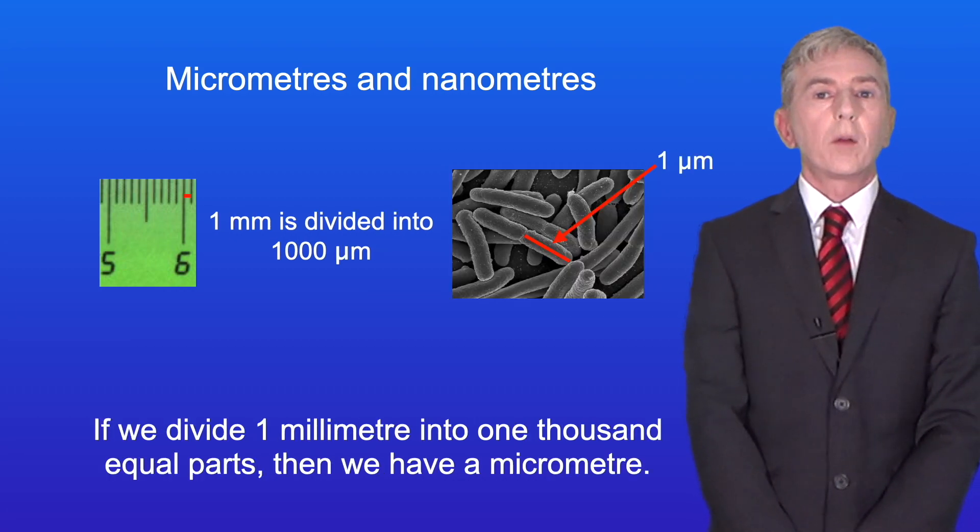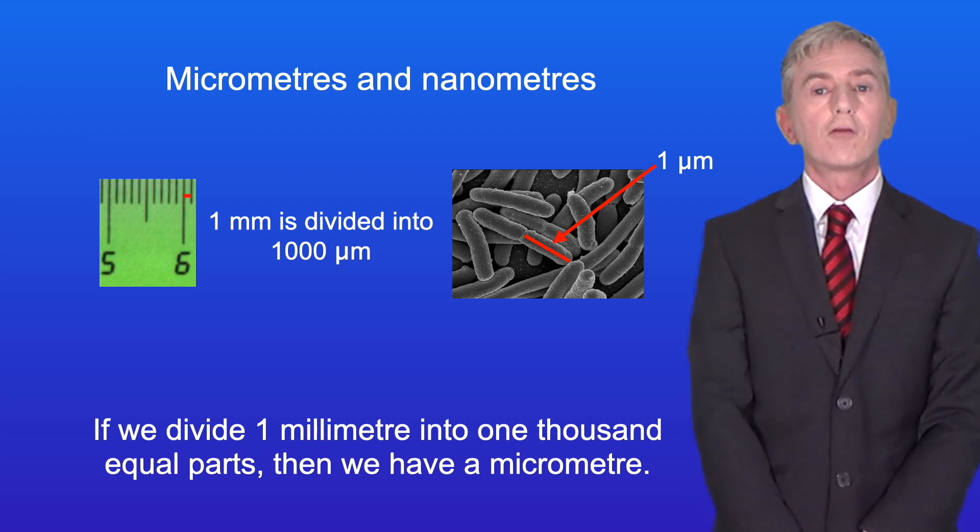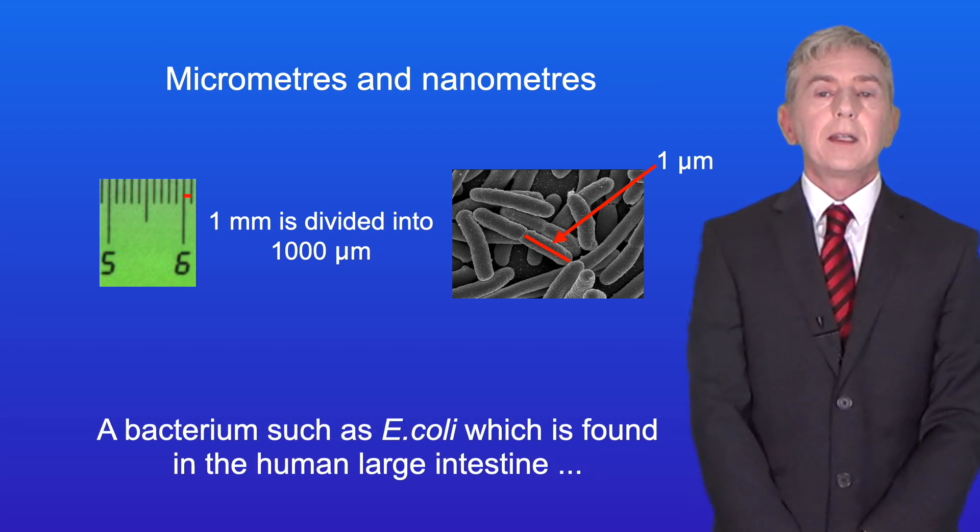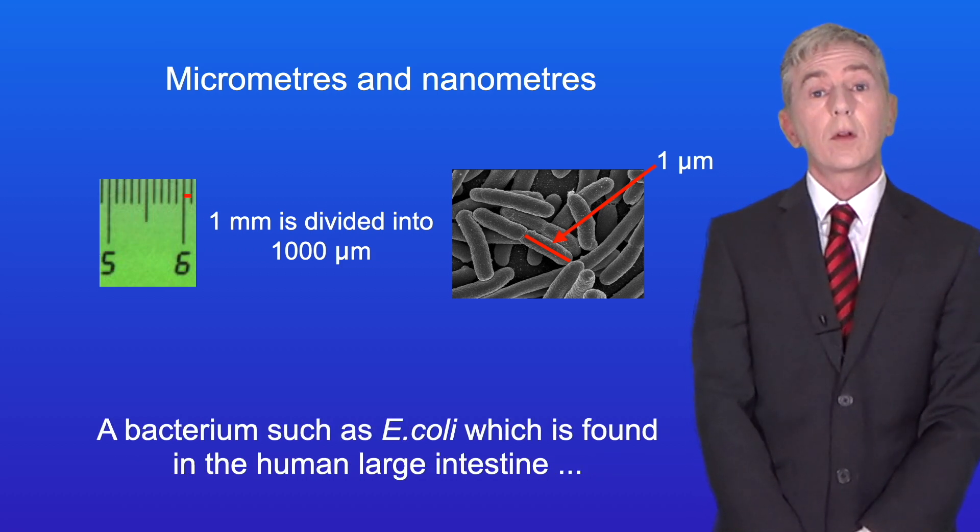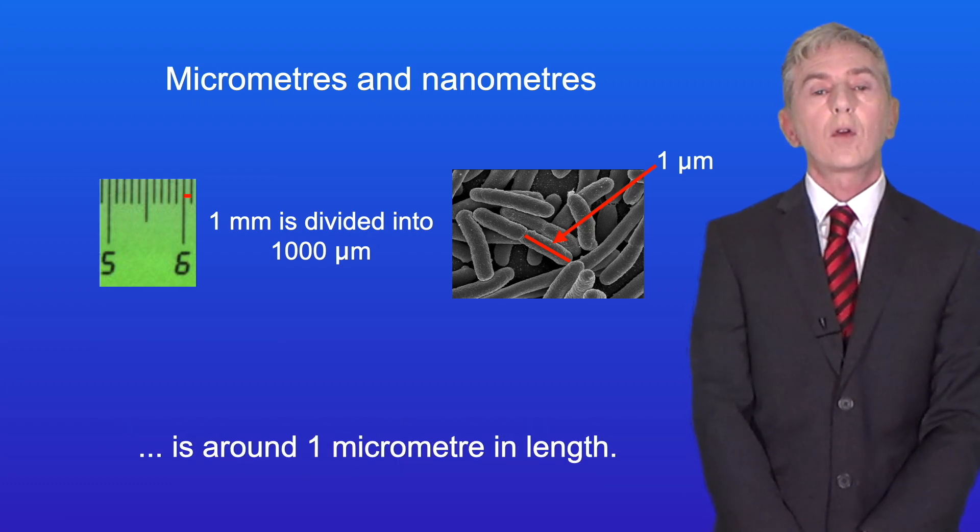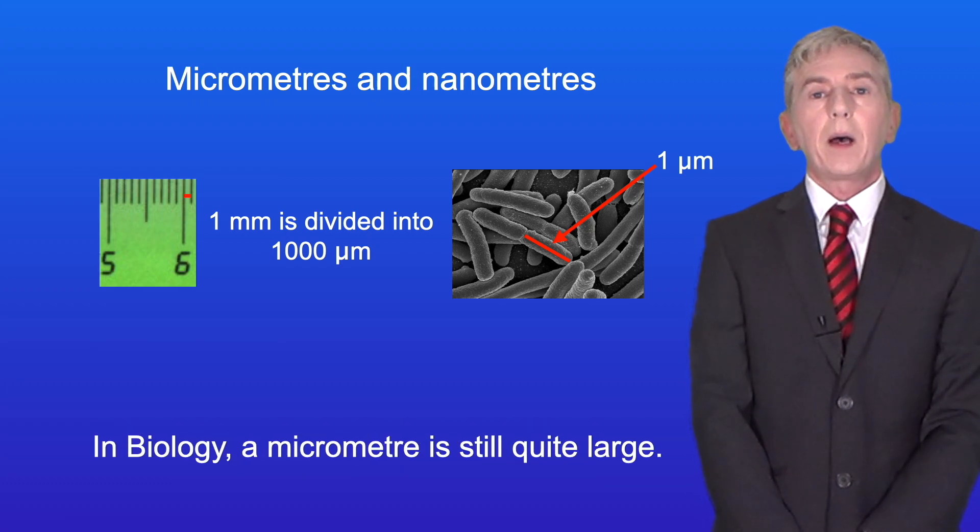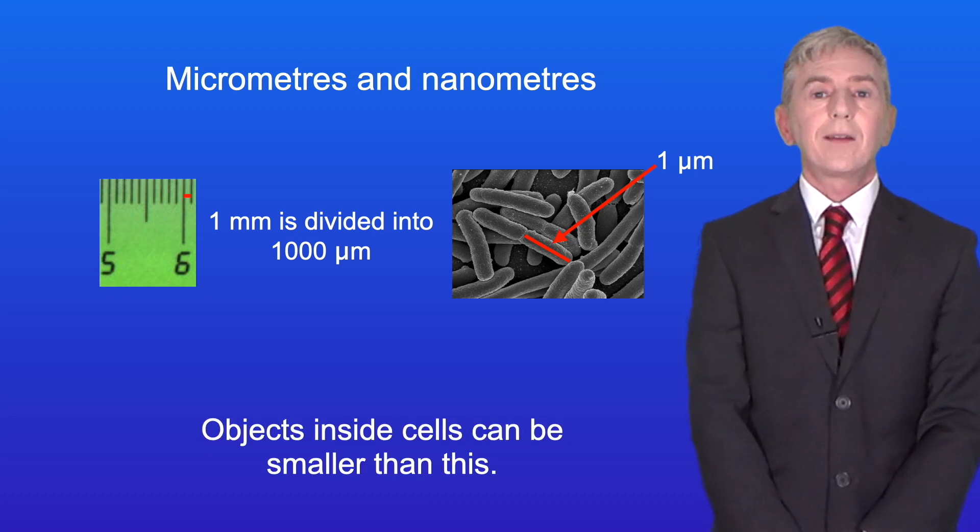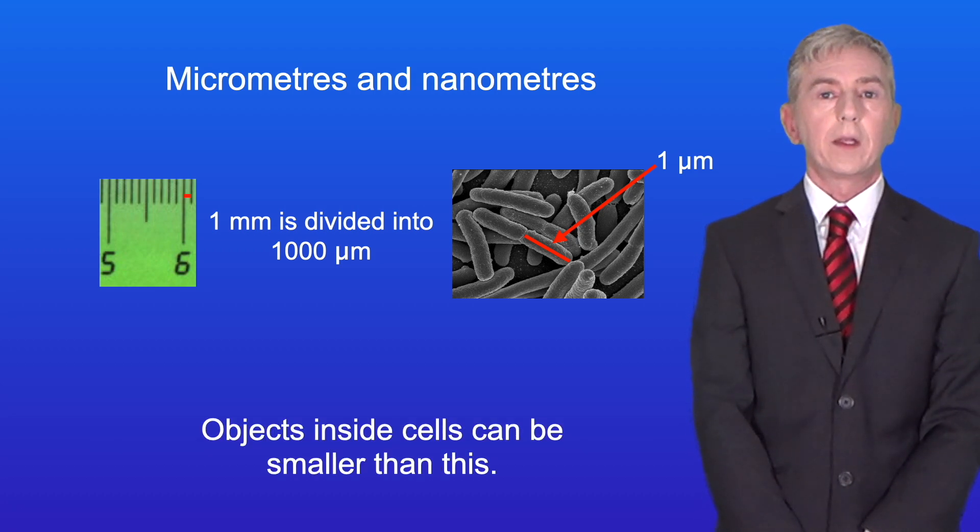If we divide one millimeter into one thousand equal parts then we have a micrometer. A bacterium such as E. coli which is found in the human large intestine is around one micrometer in length. In biology a micrometer is still quite large. Objects inside cells can be smaller than this.